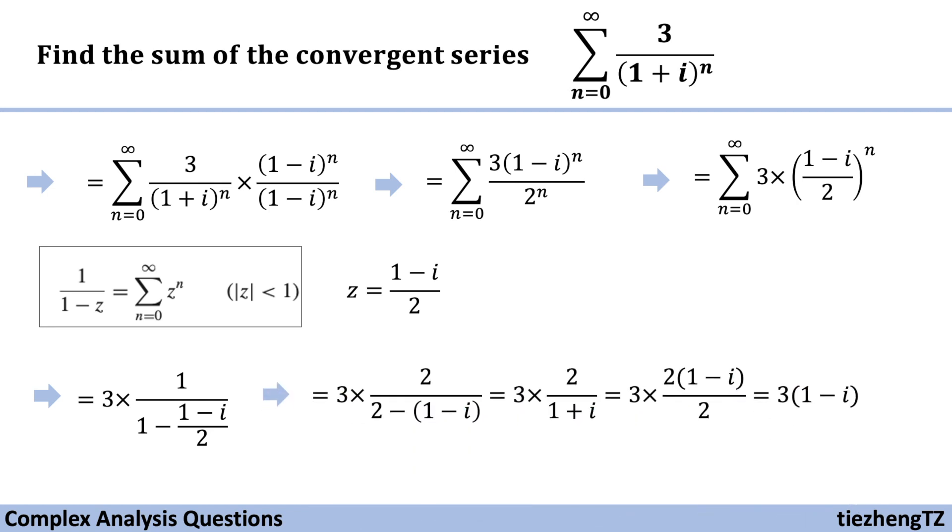So just organize step by step. And here we get this final answer, which is 3 times (1 - i). And this is the sum of this given convergent series.